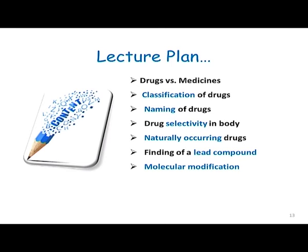Then we will move on to classification of drugs. Later on, we will figure out how one can name the drugs. And then we will move on to drug selectivity in the body, which means if you have taken a drug for a particular pathological symptom, it should be able to alleviate only that particular symptom. Finally, we will learn about finding a lead compound and molecular modifications.